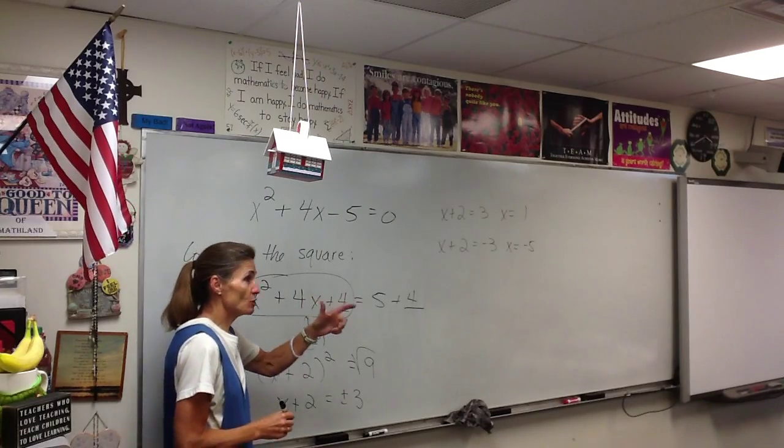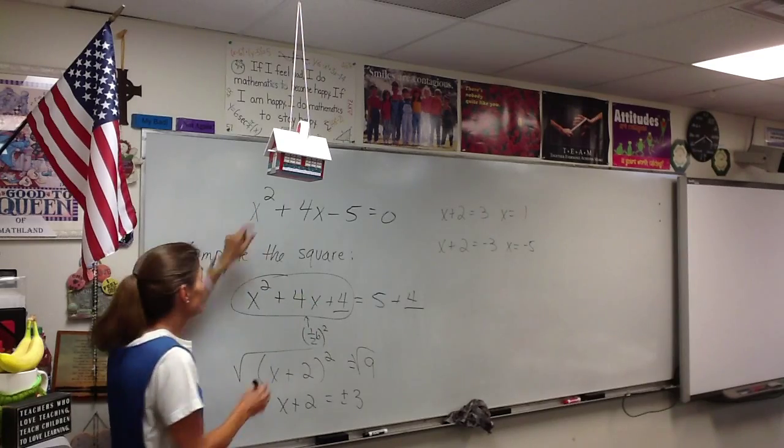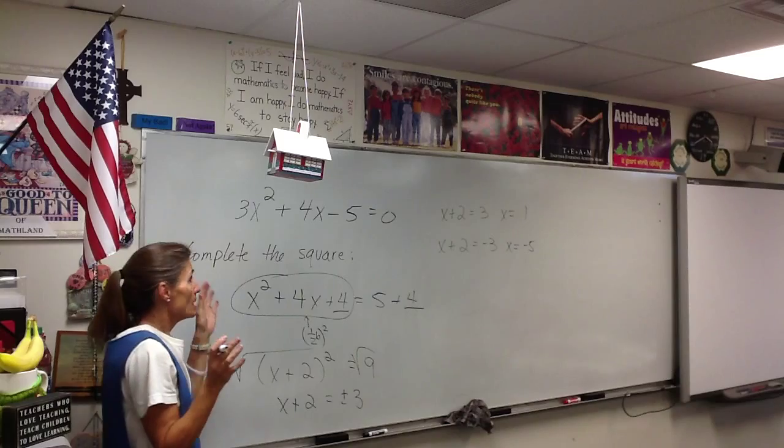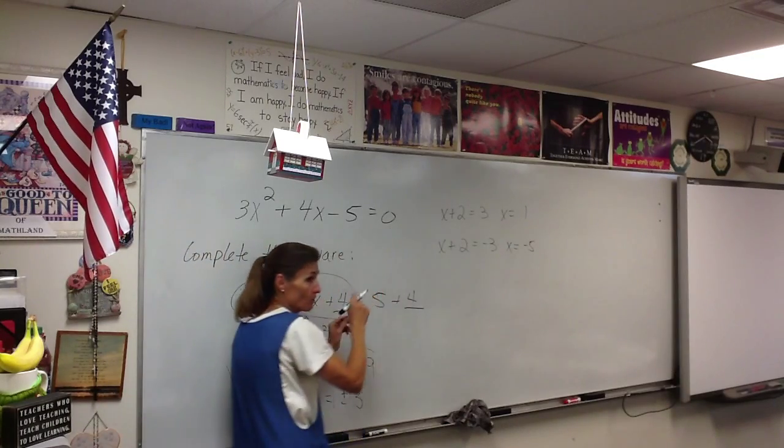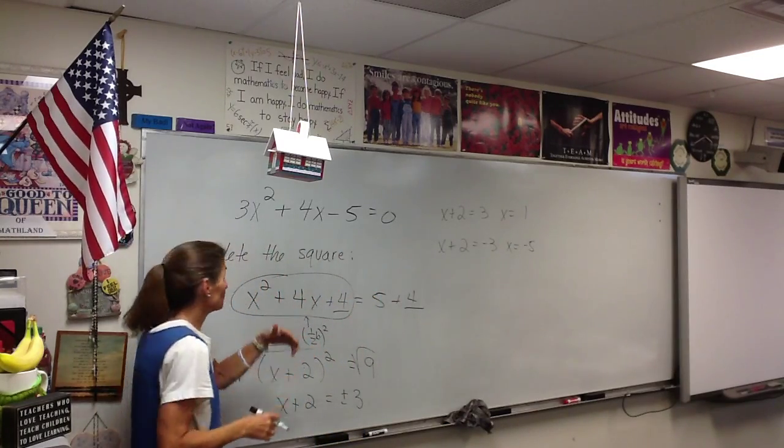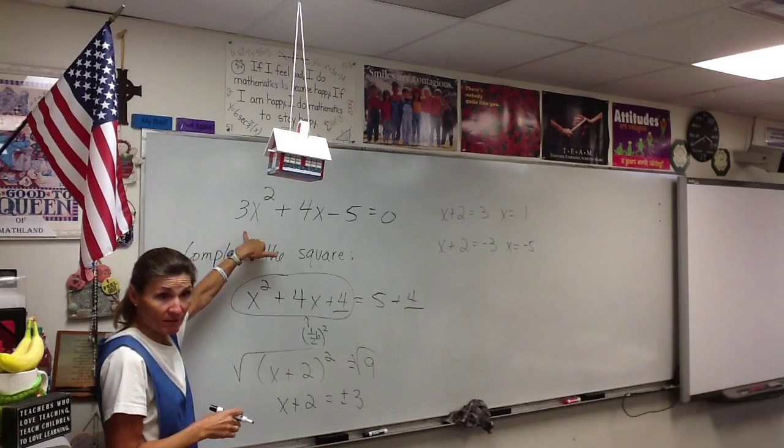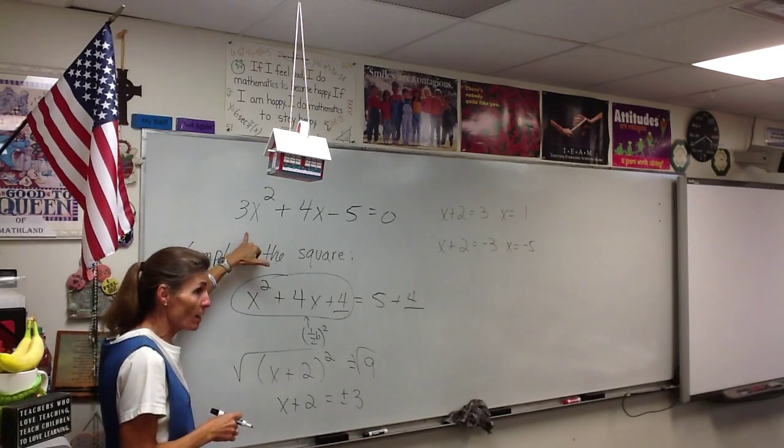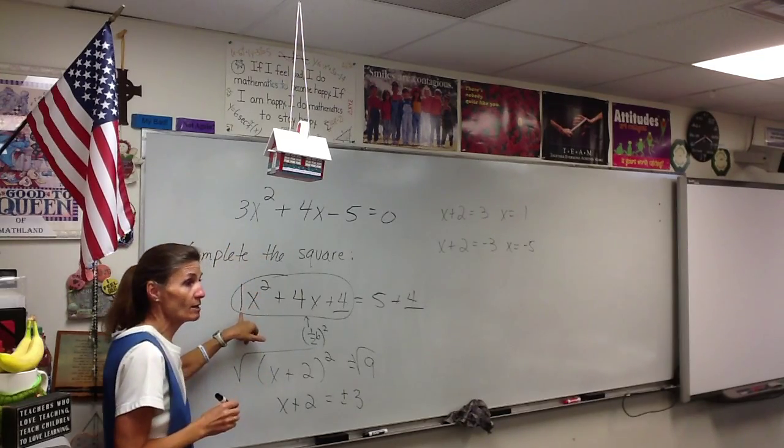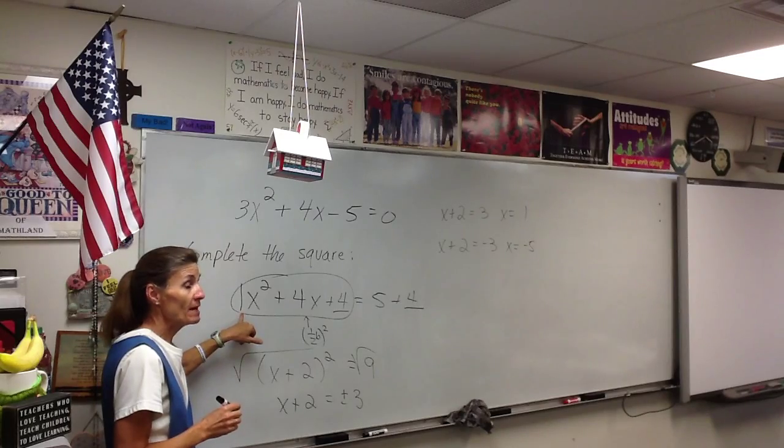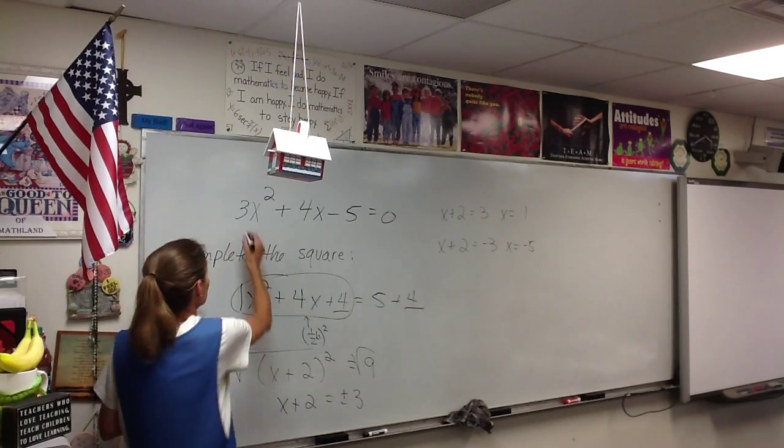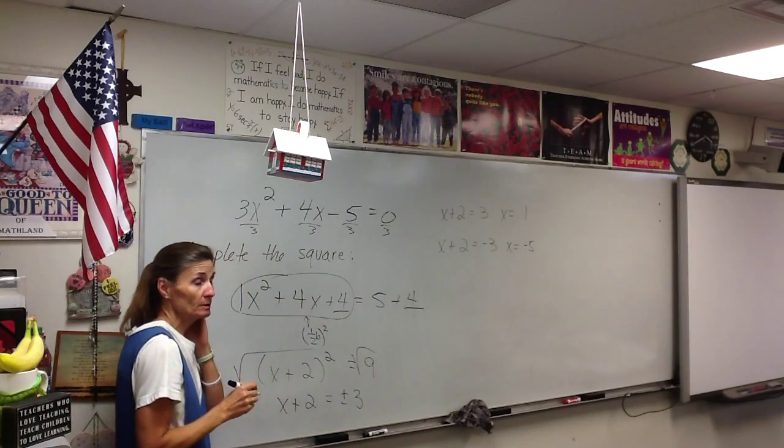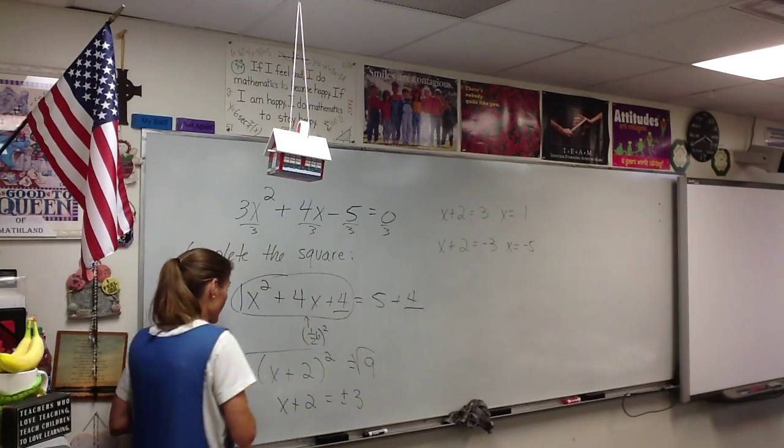Little extra issue here. If by chance the equation, let's say it had a 3 or something there, not only do you have to move the 5 over to get started with the process, but you also have to divide everything by 3. You cannot complete the square unless this coefficient right here is a 1. If it's not a 1, you need to do the division and make it a 1.